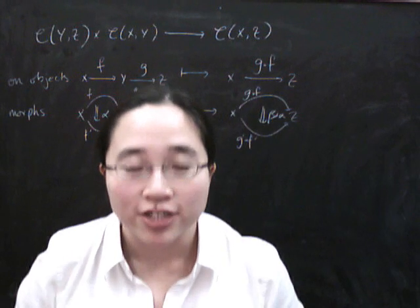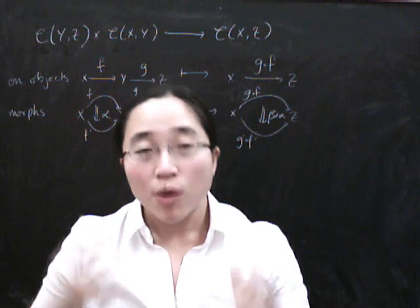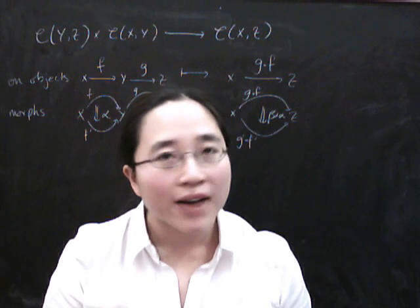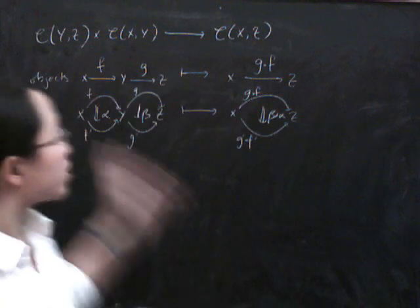Today we're going to look at the middle four interchange law for two categories. What we're really going to do is show how it comes from the functoriality of this composition functor.